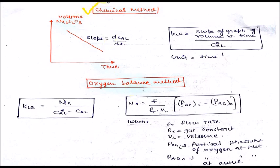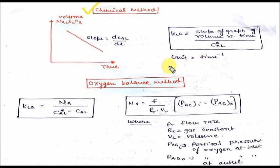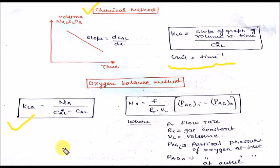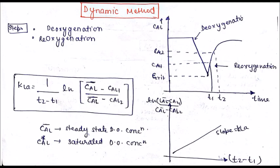In the chemical method, you calculate kLa by finding the slope of a graph of volume of Na₂S₂O₃ versus time. The unit of kLa is per time (inverse time). You can also calculate kLa from the oxygen balance measurement method using the formula shown.